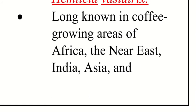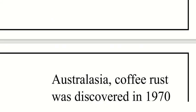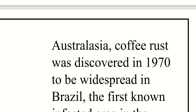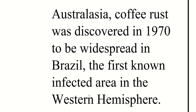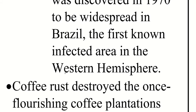Long known in coffee growing areas of Africa, the Near East, India, Asia, and Australia, coffee rust was discovered in 1970 to be widespread in Brazil — the first known infected area in the western hemisphere.